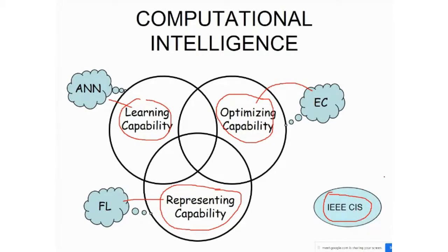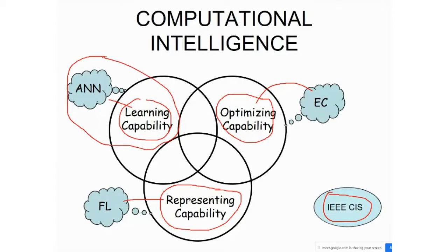You can go to various societies — different societies have different objectives. I am talking about the IEEE Computational Intelligence Society, which talks about these three important aspects. There are other aspects available too, and there will be overlapping — for example, artificial neural network overlaps with machine learning. You may have heard about machine learning algorithms over the last few days, and ANN is also part of machine learning. But the IEEE Computational Intelligence Society talks about ANN as part of the learning capability.